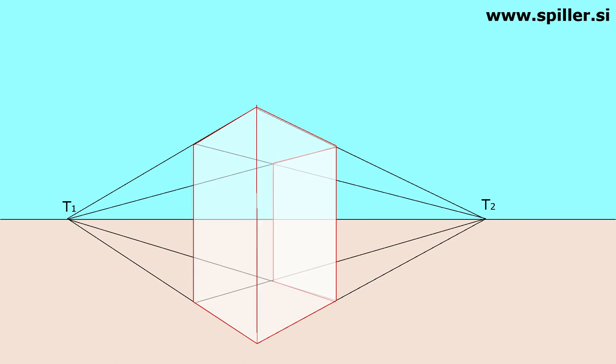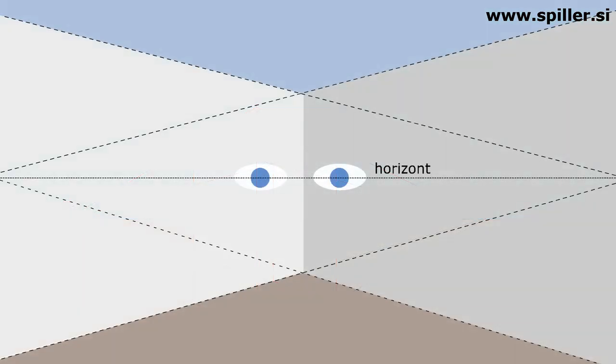Making the block translucent adds more construction lines, and remarkably they also converge at the same point. This transparent block prompts us to consider what happens within it, akin to being inside a room. Even within, if edges are parallel, guidelines between walls and the floor or ceiling intersect at a single point on the horizon.